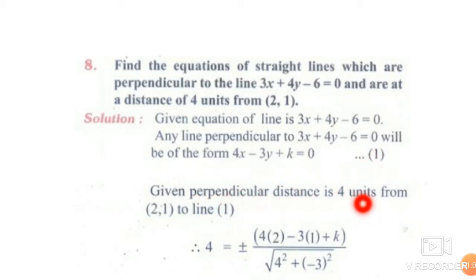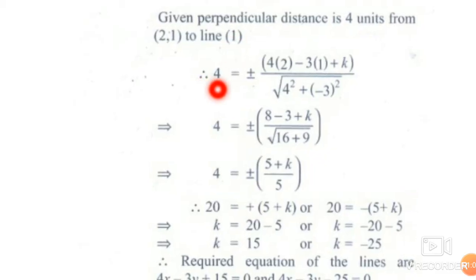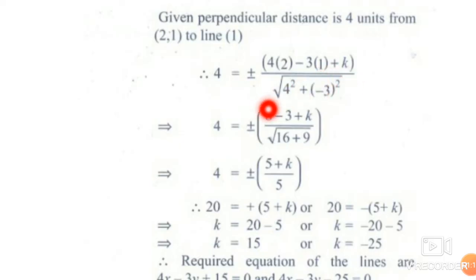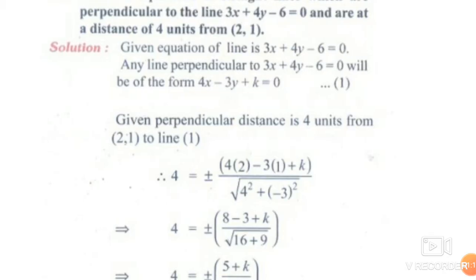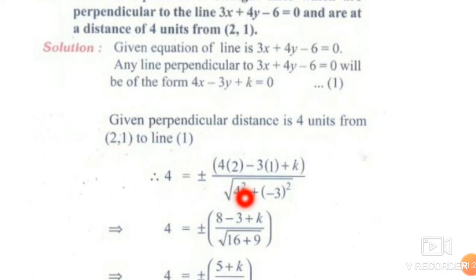Given, the perpendicular distance is 4 units from (2, 1) to line 1. For 4 units, 4 is equal to plus or minus — using the formula: ax1 plus by1 plus c divided by the square root of a squared plus b squared. Here, a equals 4, b equals minus 3, c equals k, and (x1, y1) equals (2, 1).